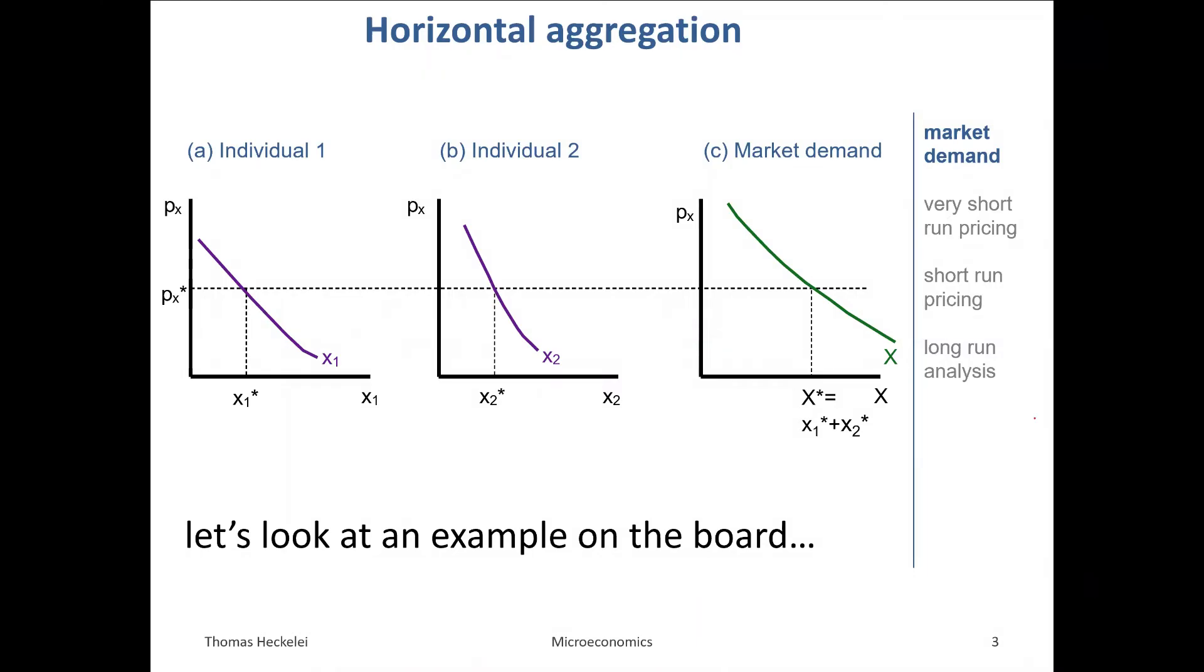Now if you want to represent this aggregated demand on a graph from individual demand to market demand, the way we do it is called horizontal aggregation. Why horizontal? Because we sum up the quantity of goods, and the quantity of goods normally on the horizontal axis of the graph. Because we sum up the quantity demanded from each individual, we sum horizontally. Just a very general idea. Now let's look at it on the board.